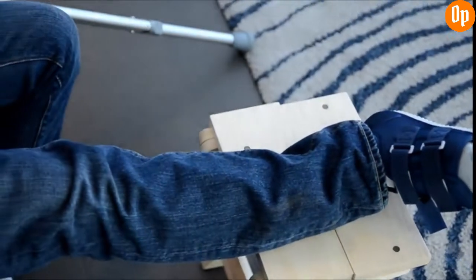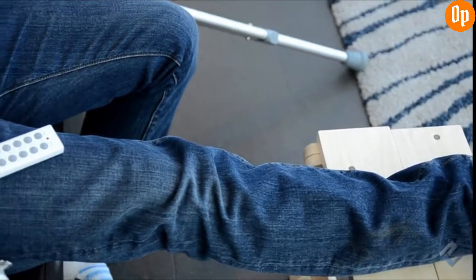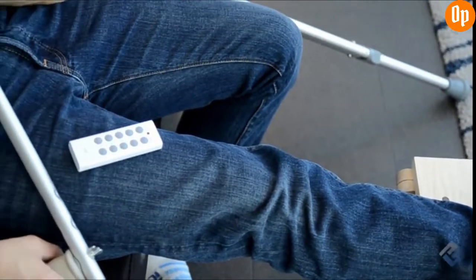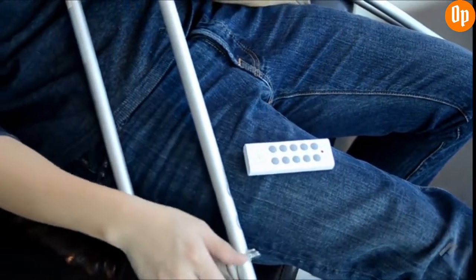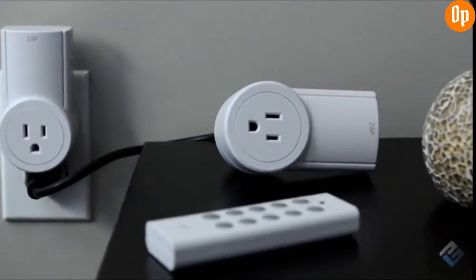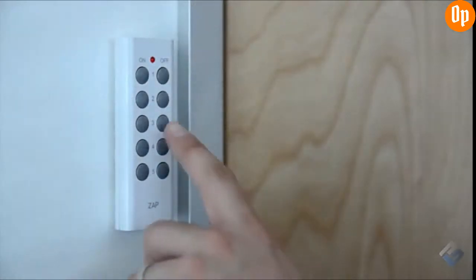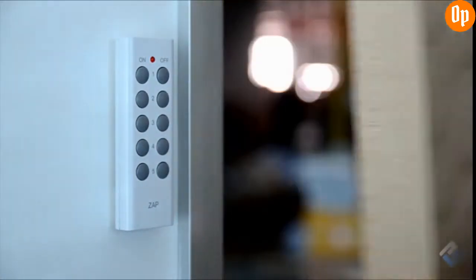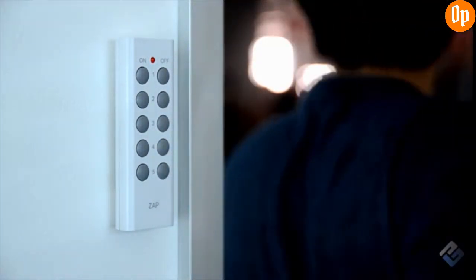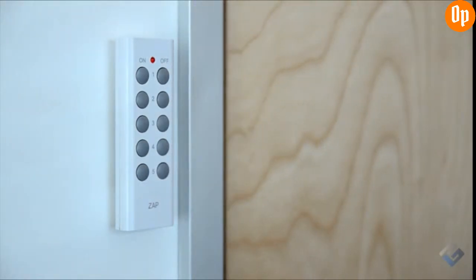The zap outlet is a perfect companion for mobility impaired individuals, giving them the ability to control their appliances safely and effortlessly. Use an extension cord to fully utilize your zap outlets in tight spaces. Get creative with your control and mount your remote on your wall, so you can easily turn your lights and appliances on or off as you walk through the door.